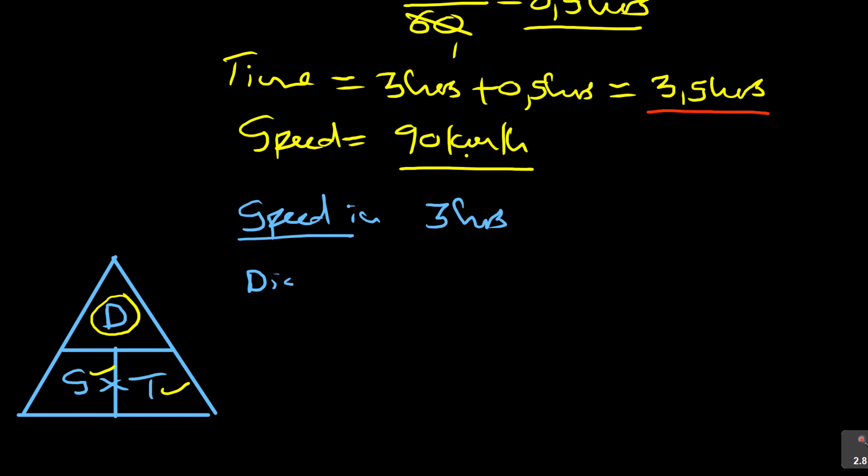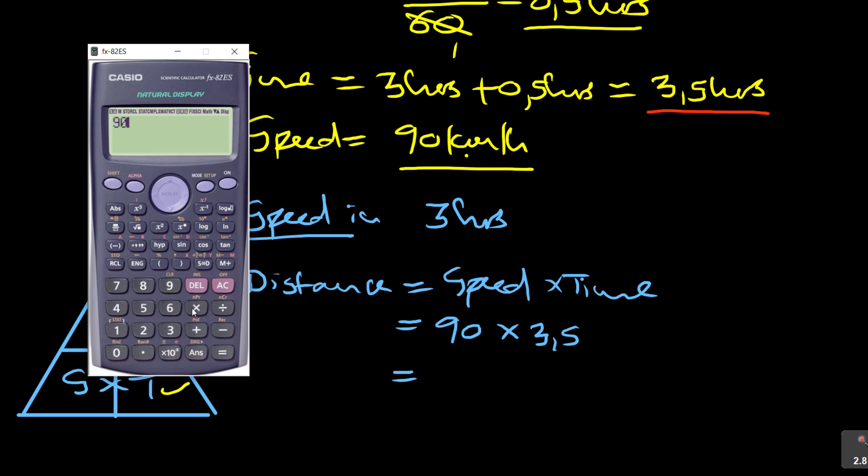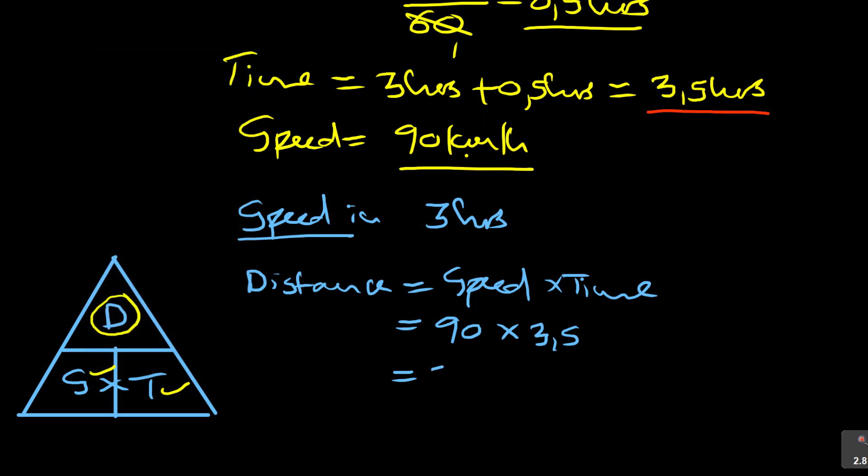What is distance? D equals S times T. But don't write it like that. You need to write it in full because they won't understand what is D, S and T. So we're going to say distance is equal to speed times time. Our speed was 90 kilometers per hour times time is 3.5. When you multiply this, it will give us the distance that Mr. Mati traveled.